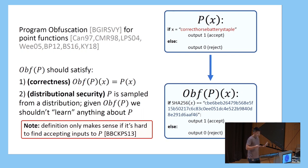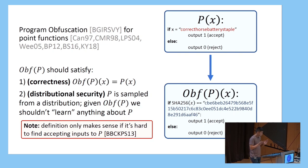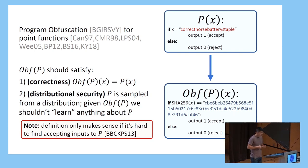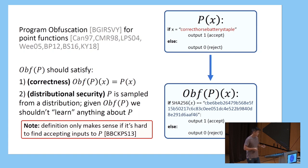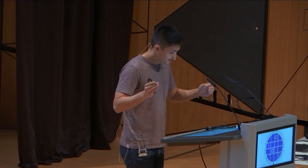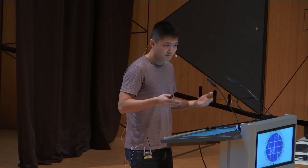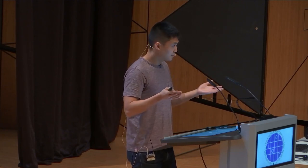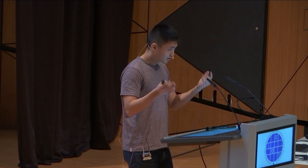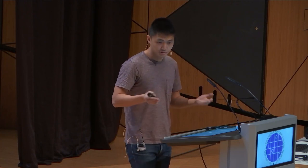There are going to be many ways to define the security of obfuscation, but for today we're going to go with this distributional version of security. We're going to work in the setting where the program itself is sampled from some fixed a priori distribution, and we want to say that given the obfuscation of this program, you shouldn't be able to learn anything about the underlying program. If you're picking your password with any entropy whatsoever, you are implicitly sampling your point function from some distribution.